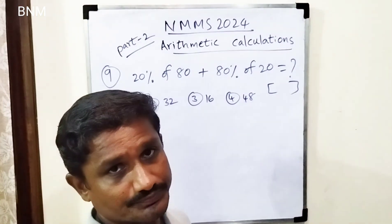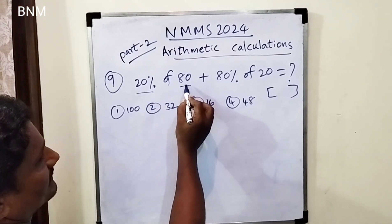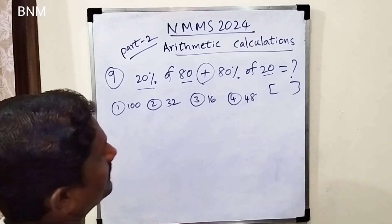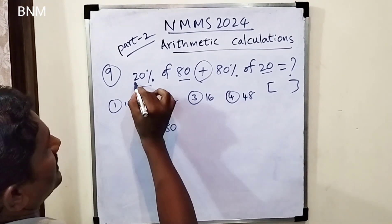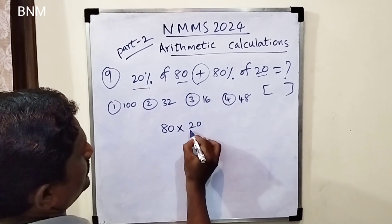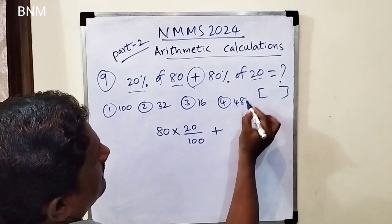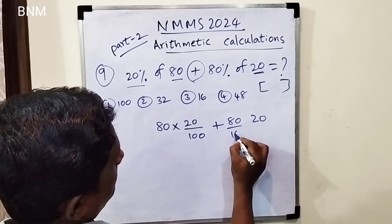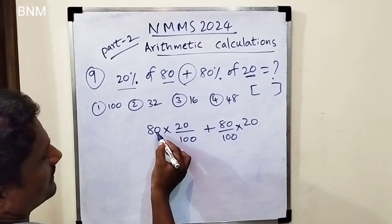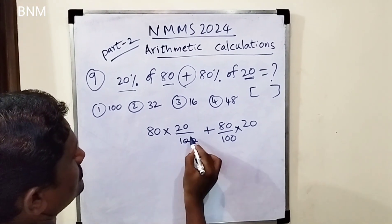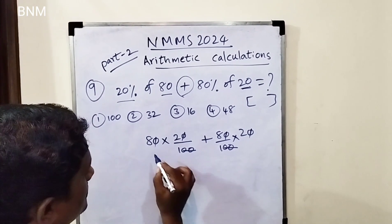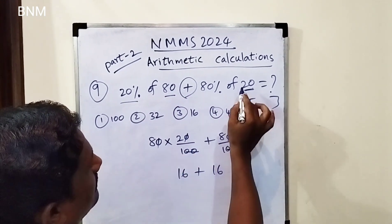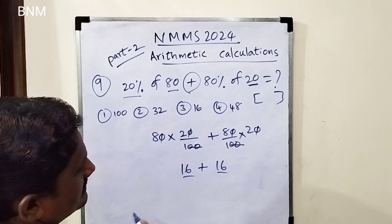Next bit is the 9th bit: 20% of 80 plus 80% of 20. What value? 20% is 20 by 100, and the number is 80. Then 80% is 80 by 100, and the number is 20. So 80 gives 16, and 8 gives 16.